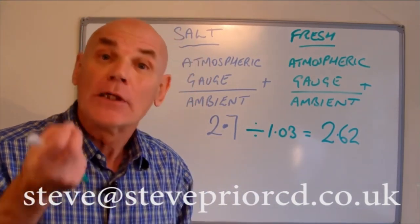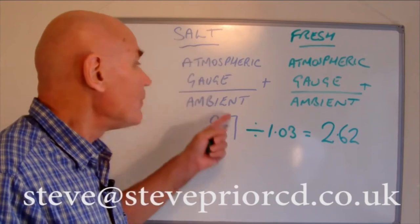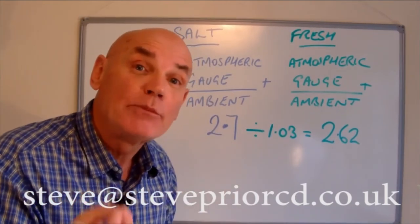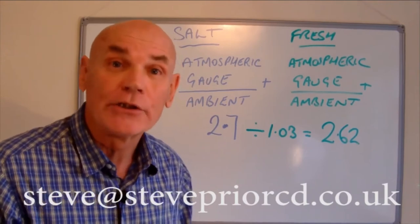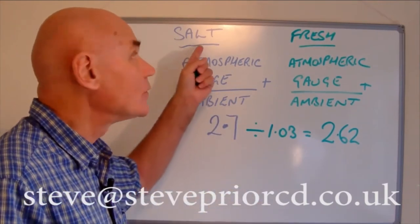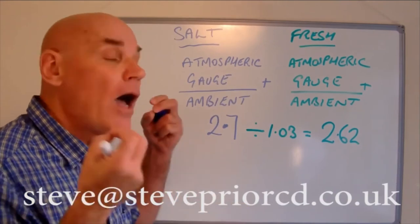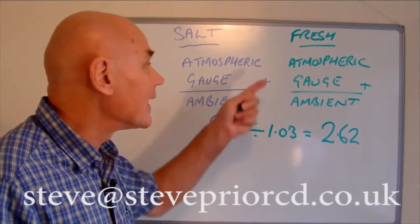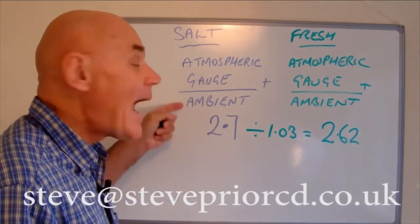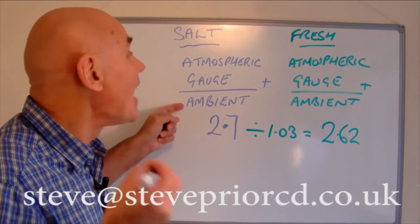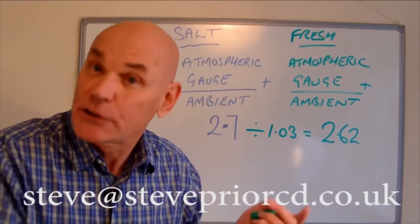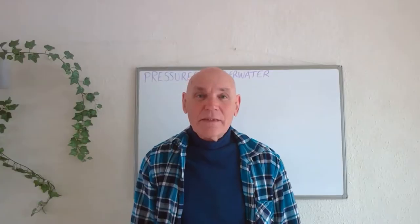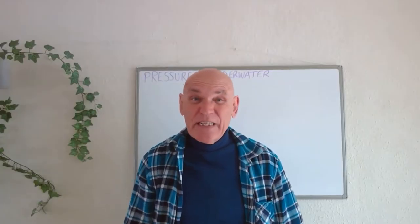So why do people get these questions wrong? If we're asked what is the gauge pressure at 27 meters of water, we can't answer the question without knowing whether it's salt water or fresh water. First, look to see what the question is asking — is it gauge pressure or ambient pressure? And secondly, look to see if it's salt or fresh, because you can't answer the question without knowing that. But it's all in the question.